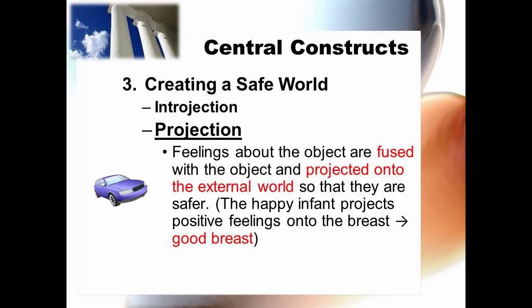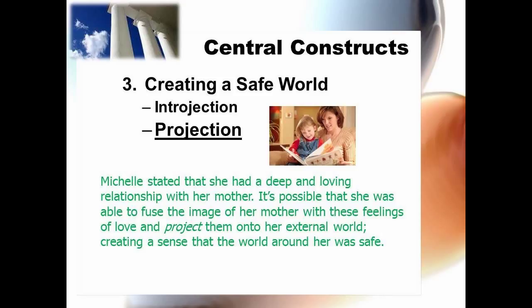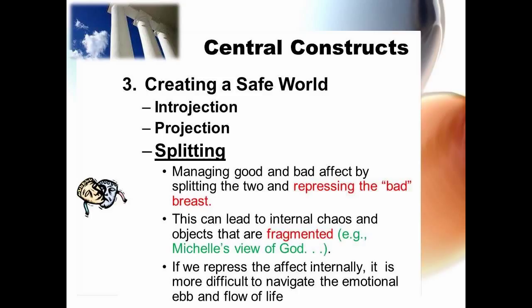Here is an example of how Michelle may have experienced projection. Finally, there's splitting, which is a way of managing good and bad affect by splitting the two and repressing the bad breast, which can lead to internal chaos and objects that are fragmented. An example is Michelle's view of God. If we repress the bad affect internally, it is more difficult to navigate the emotional ebb and flow of life. This is essentially an overview, and we'll spend more time discussing these three concepts in class.